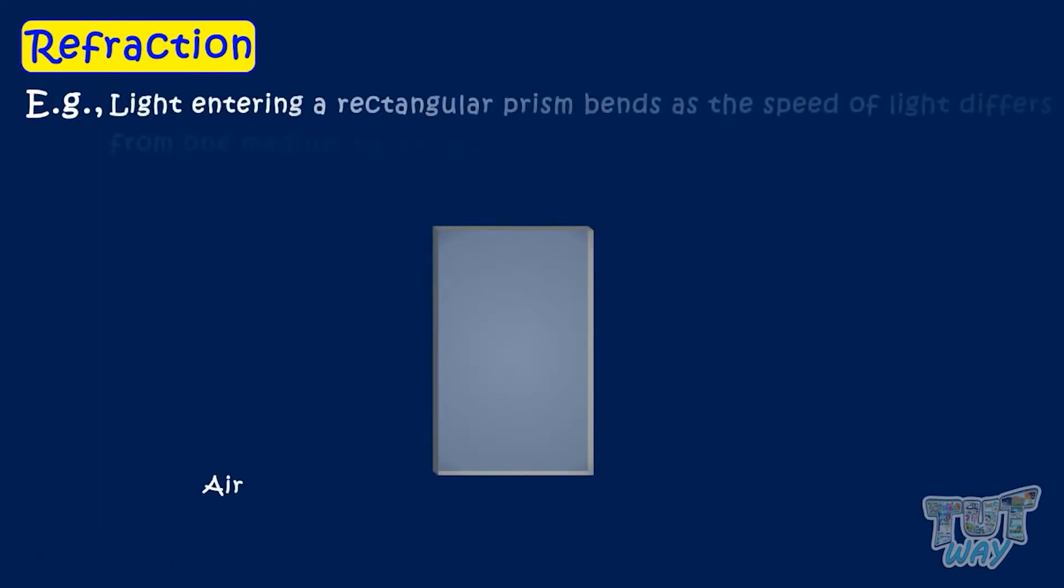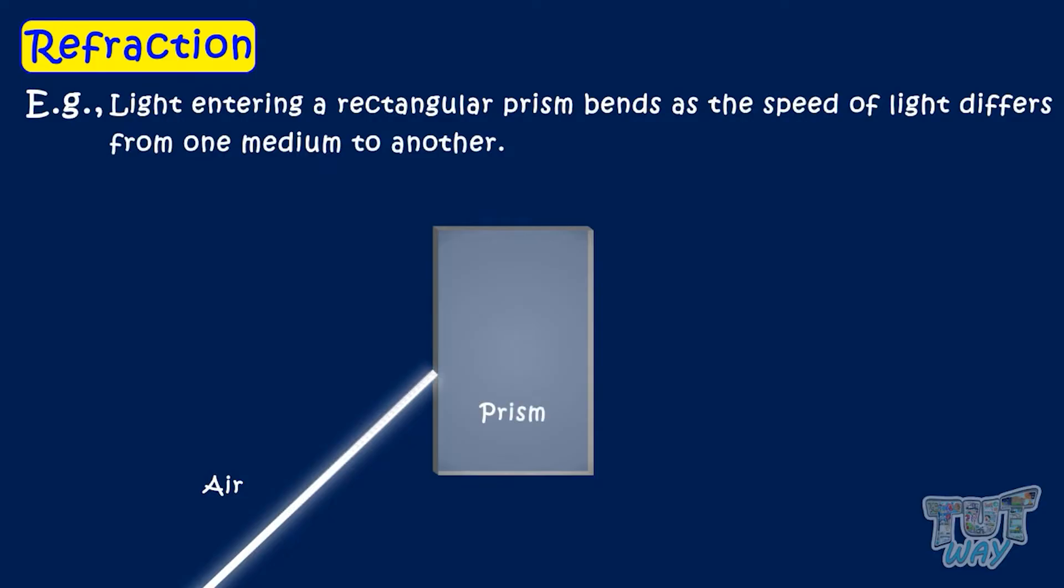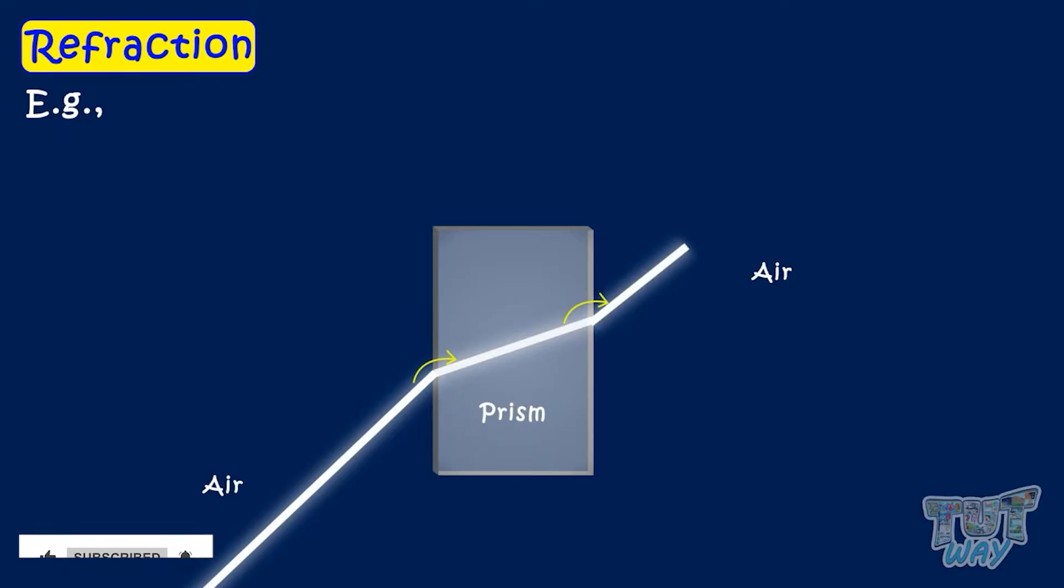Here's an example. When light from air enters a rectangular prism, which is another medium, it bends because the speed of light differs in different mediums. And when the light again passes from rectangular prism to the air, it again bends as its speed changes again. So light wave changes both its direction and speed.